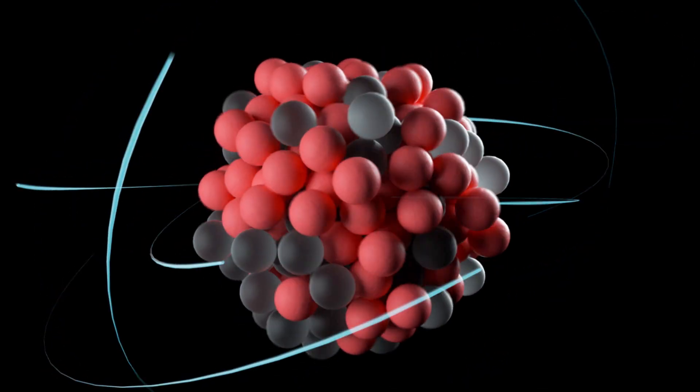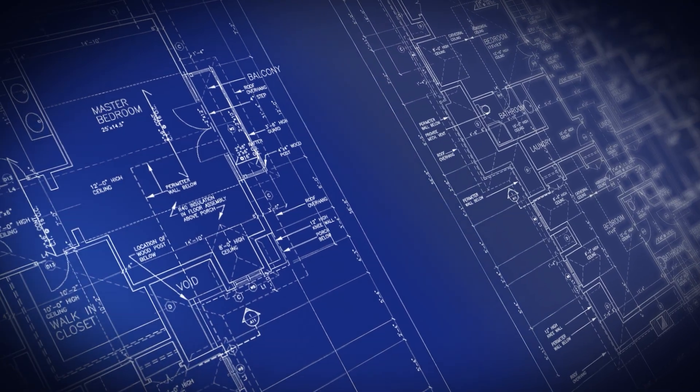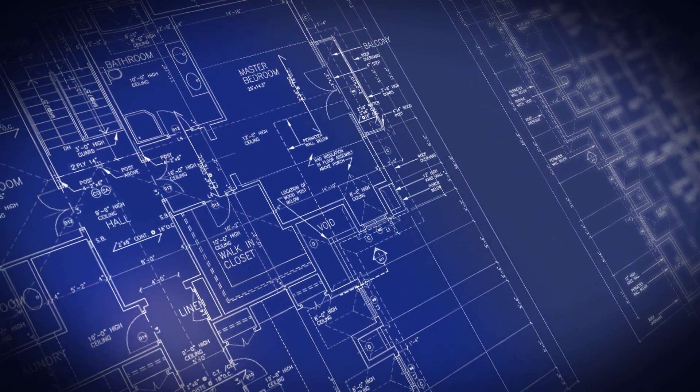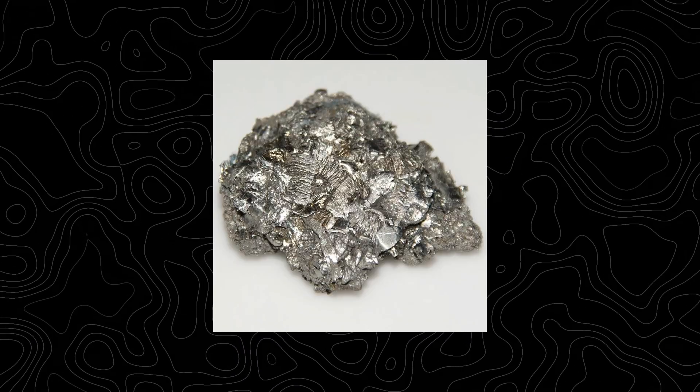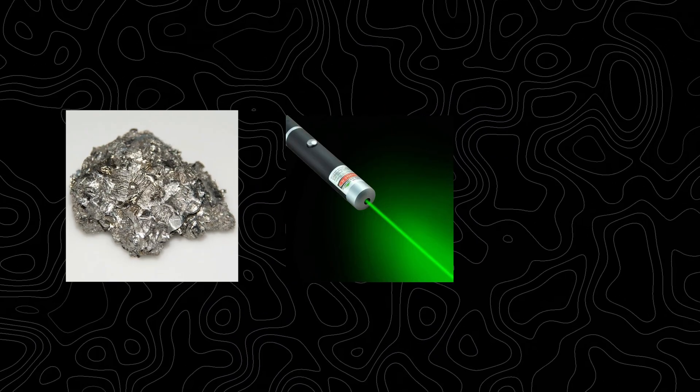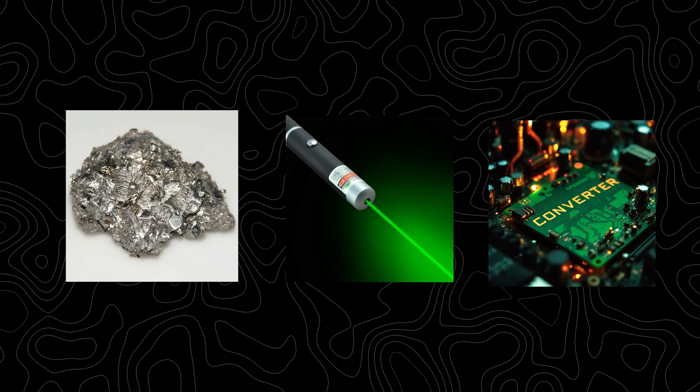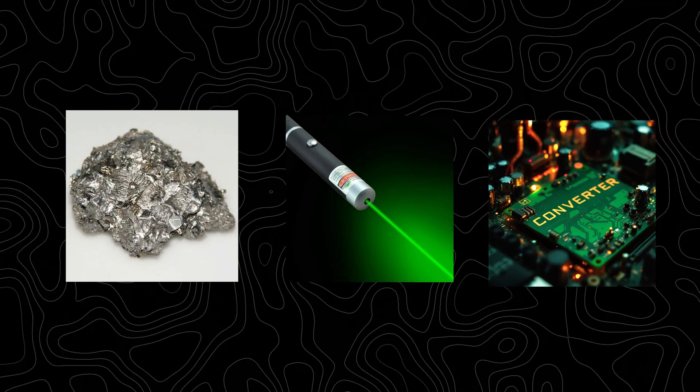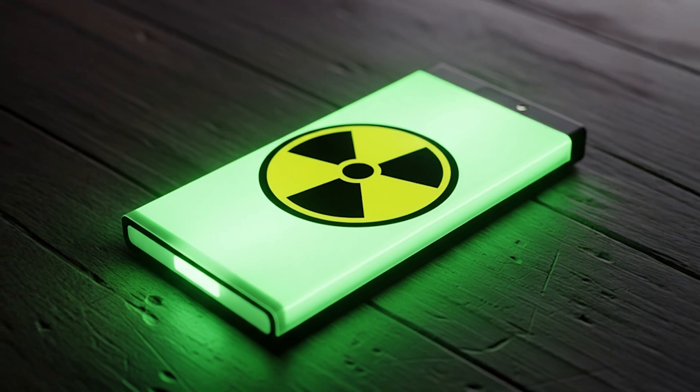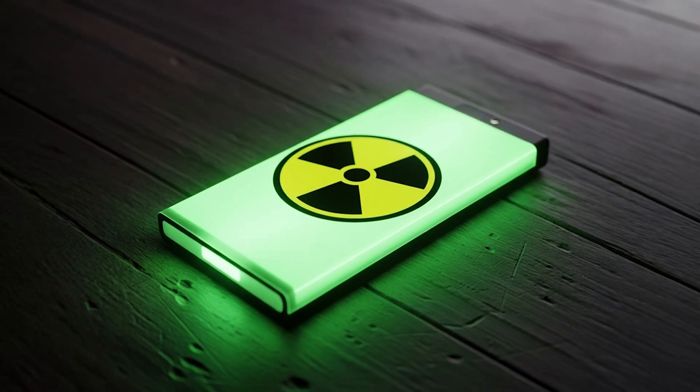So how do you build a battery from this? The blueprint is both simple and genius. You take a tiny amount of this isomeric material. You pair it with a laser trigger system and a converter that turns the released gamma rays into electricity. The result? A power cell with an energy density that makes lithium ion look like a potato battery.